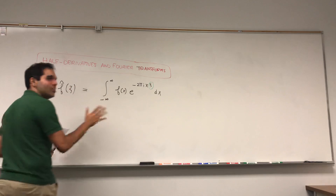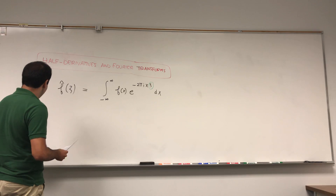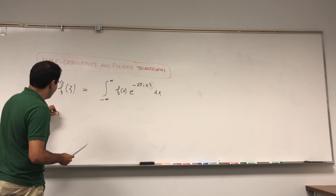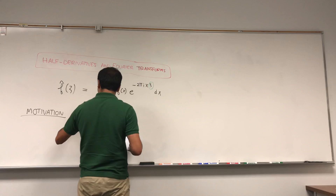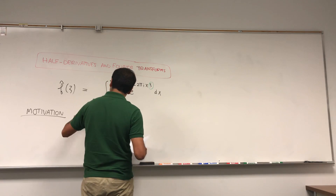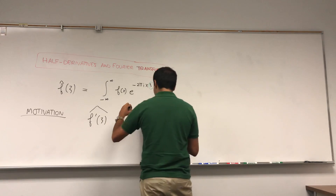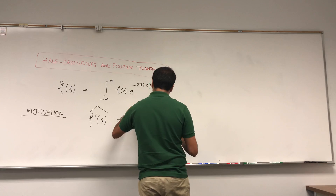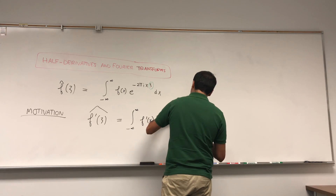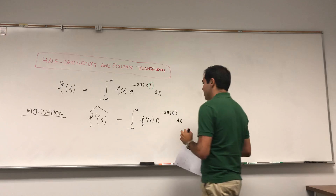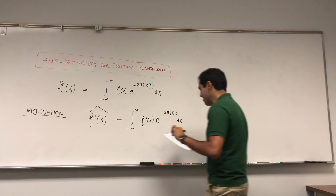Now let me give you some motivation for the formula, which is very natural. What is the Fourier transform of f prime? Maybe you know it; if not, let me quickly derive it. It's the integral from minus infinity to infinity of f'(x) times e to the minus 2πi·x·ξ dx.